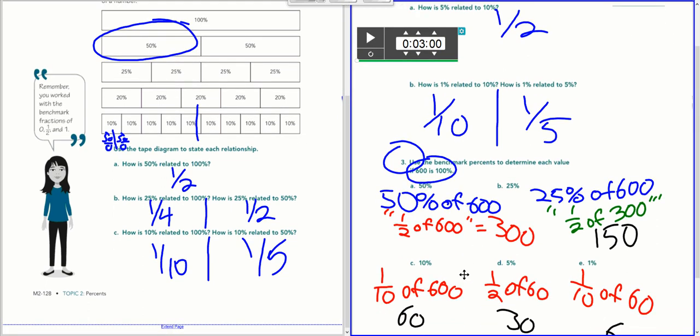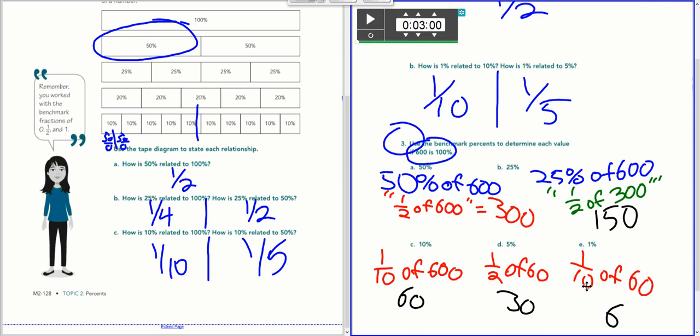And then 10% is one-tenth of 600, which would be 60. 5% is like one-half of 60, which is 30. And 1% is like one-tenth of 60, which is 6. I'm just using these rules, these generalizations that I found over on page 128 and 129.